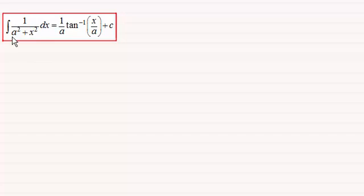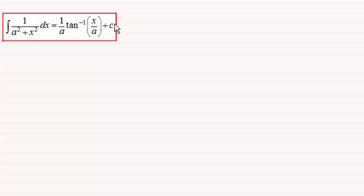When it comes to working with standard integrals like this one here — 1 divided by a squared plus x squared, where a is a constant — if we're integrating this with respect to x, the result was 1 divided by a multiplied by the inverse tan or arctan of x over a, plus a constant of integration c. But if we've got limits here, care must be taken.